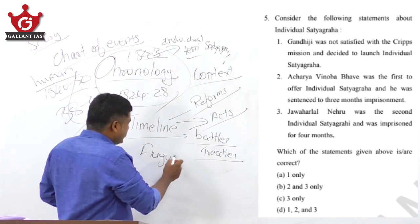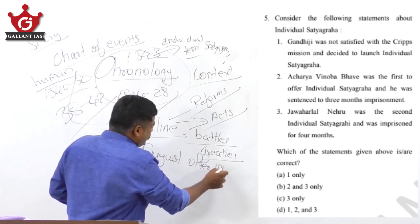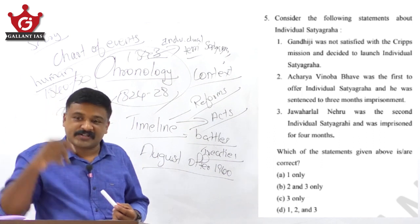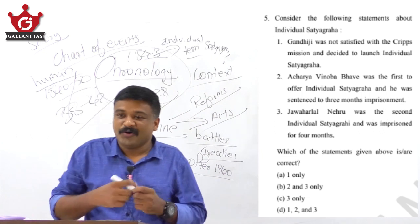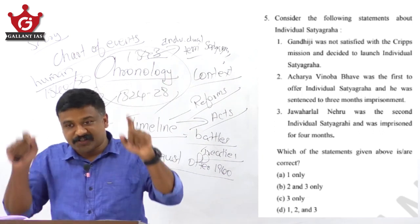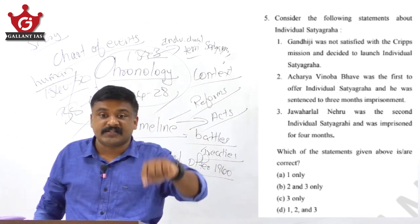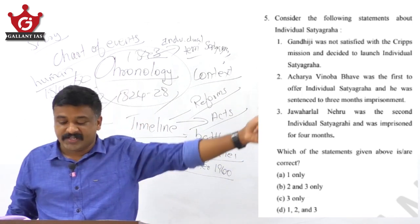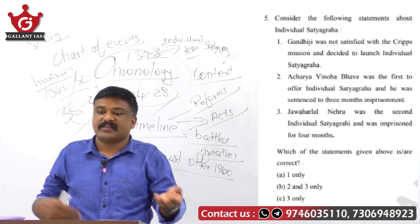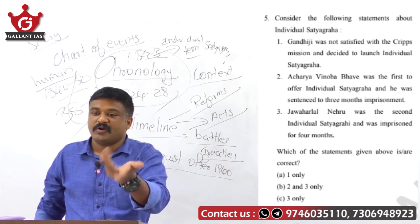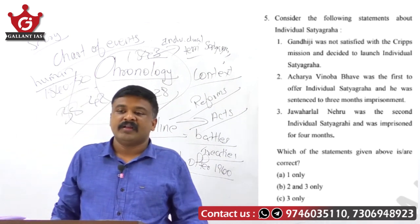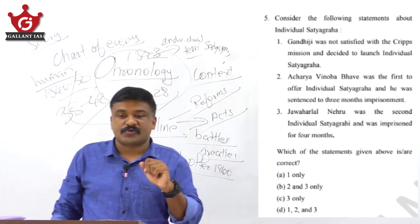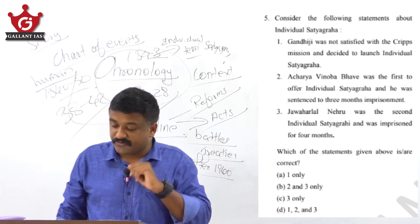After the failure of the August Offer, Gandhiji launched individual satyagraha. The August Offer was not Purna Swaraj — it was not talking about formation of an independent government. It was not acceptable. So, failure of the August Offer was the reason for the individual satyagraha. Note: failure of the Cripps Mission resulted in the launch of the Quit India Movement.